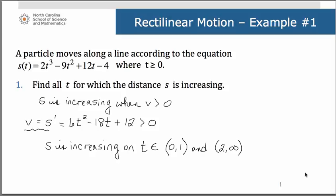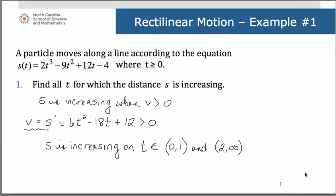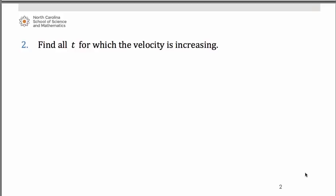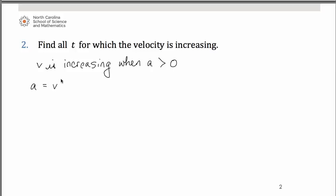So the position s for this particle is increasing when time is between 0 and 1, and then from 2 to infinity. Now let's consider the t values for which the velocity is increasing. Remember our rules: velocity is increasing when the acceleration is greater than zero. Acceleration is the derivative of velocity, giving us 12t minus 18. Solving that inequality, we get t is greater than three halves, one and a half. So anytime the time value is greater than 1.5, that is when the velocity will be increasing.